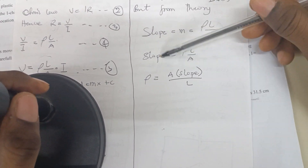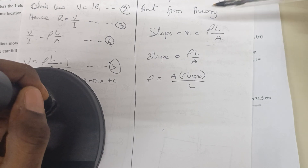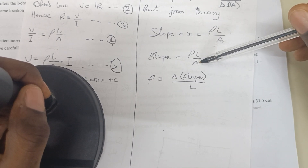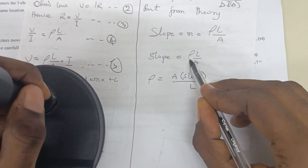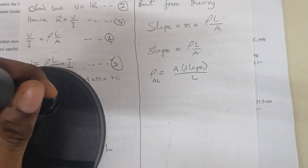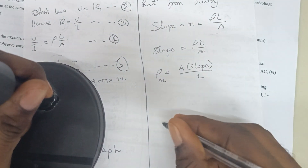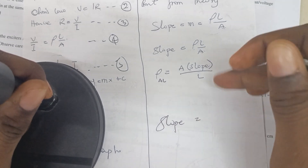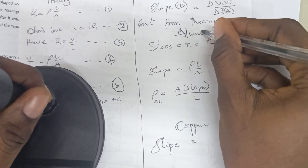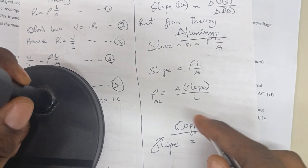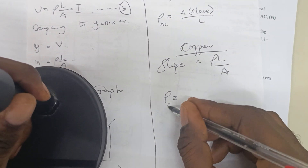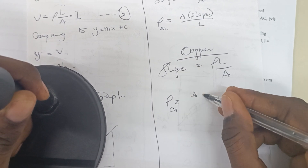For aluminium, we have the slope, the length L, and the area A, so we make resistivity the subject and find the resistivity for aluminium. Then we repeat the process for copper: we quote the slope equation again, equate it to ρL/A for copper, make resistivity the subject, and find the resistivity for copper.